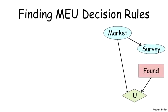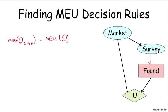In the example we've presented before, we compared two decision situations: one where the agent founds the company without any additional information about the market value, and another where the agent gets to observe the survey variable prior to making the decision. We can compare the value of the decision-making situation with the edge from S to F, minus the value of the original decision-making situation V. We computed this to be 3.25 and 2 respectively, so the value of perfect information was 1.25. This means the agent should be willing to pay up to 1.25 utility points to conduct the survey.